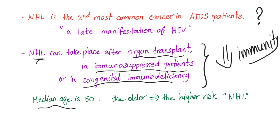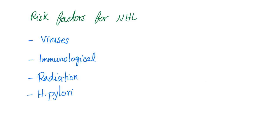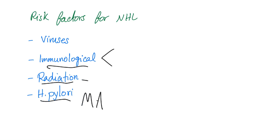The median age of presentation in non-Hodgkin's is 50 years of age. The older you get, the higher the risk of developing non-Hodgkin's lymphoma. Risk factors include viruses such as human herpes virus 8, human T-cell lymphotropic virus, sometimes HIV, and sometimes even hepatitis C virus. Immunological problems could be immunodeficiency or autoimmune problems. Radiation exposure, and also H. pylori — when we talk about MALT lymphoma, mucosa-associated lymphatic tissue lymphoma.